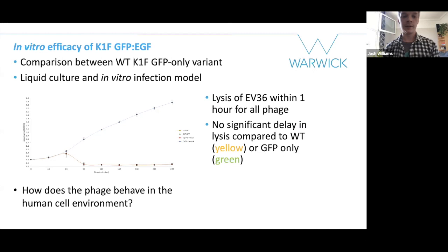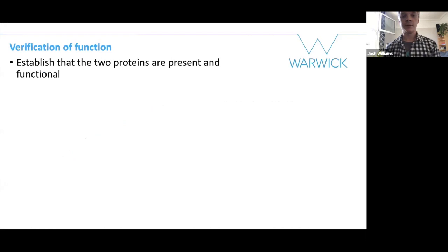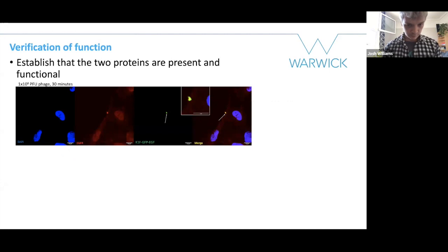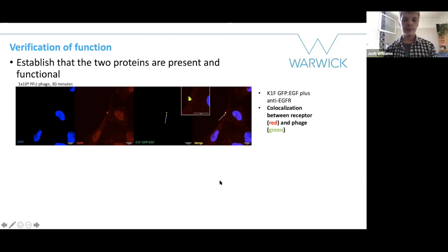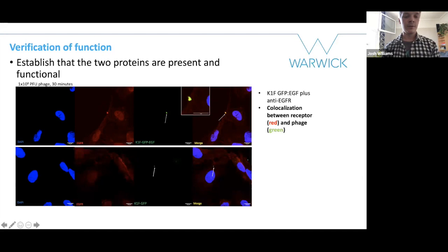But how does the phage behave in the human cell environment? I answered this by verifying the function of the EGF. I wanted to establish that the two proteins are functional and present via confocal microscopy. I fixed and stained T24 urinary bladder epithelial cells with paraformaldehyde and stained with antibody for the epidermal growth factor receptor, EGFR. There is a clear co-localization at the cell periphery between the phage and the receptor — the receptor shown in red and the phage shown in green — a very clear co-localization in the merged image. I also tested this with the GFP-only variant and found that there was no co-localization with its receptor.